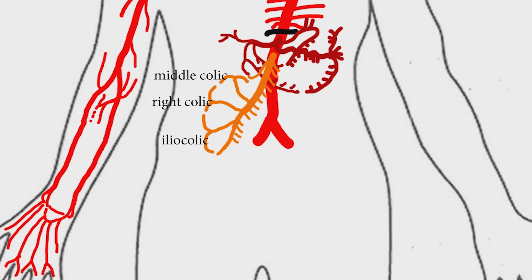Iliocolic artery gives rise to anterior and posterior cecal arteries. Appendicular branch arises from posterior cecal artery.